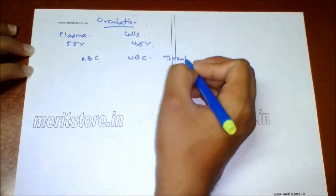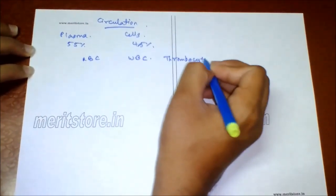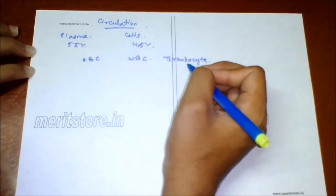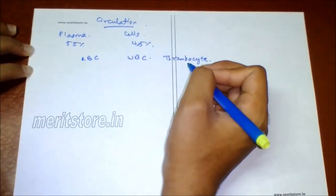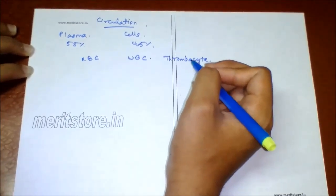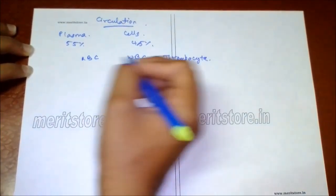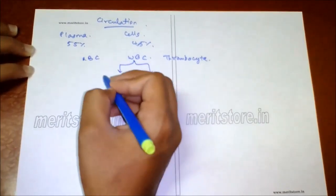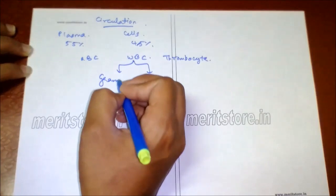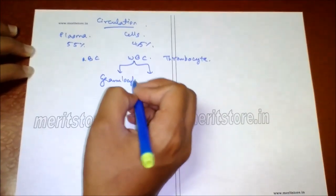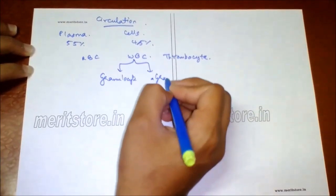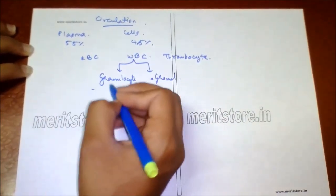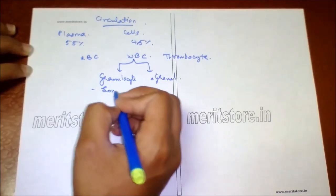RBC are biconcave, anucleated structures that contain hemoglobin. WBC are classified into granulocytes and agranulocytes based on absence of granules. Granulocytes are further classified into three types: eosinophil, basophil, and neutrophil. Neutrophil numbers increase in infection, eosinophil numbers increase in allergy.